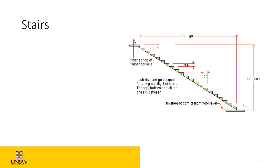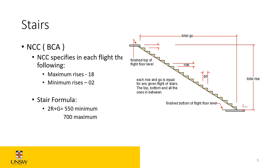According to the BCA — which is the Building Code of Australia, now called the NCC — each flight has a maximum of 18 risers and a minimum of 2. The formula for these stairs is 2R plus G, which should be between 550 and 700 millimetres maximum, with an average of around 650. The rise and go must be equal for any given flight of stairs, so the height of each riser should be the same from step to step; otherwise you'll have an issue.